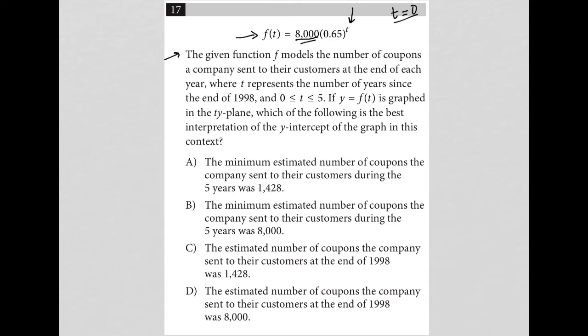At the end of each year, where t represents the number of years since the end of 1998. So at the end of 1998, they're sending out 8,000 coupons because that's where t equals 0.